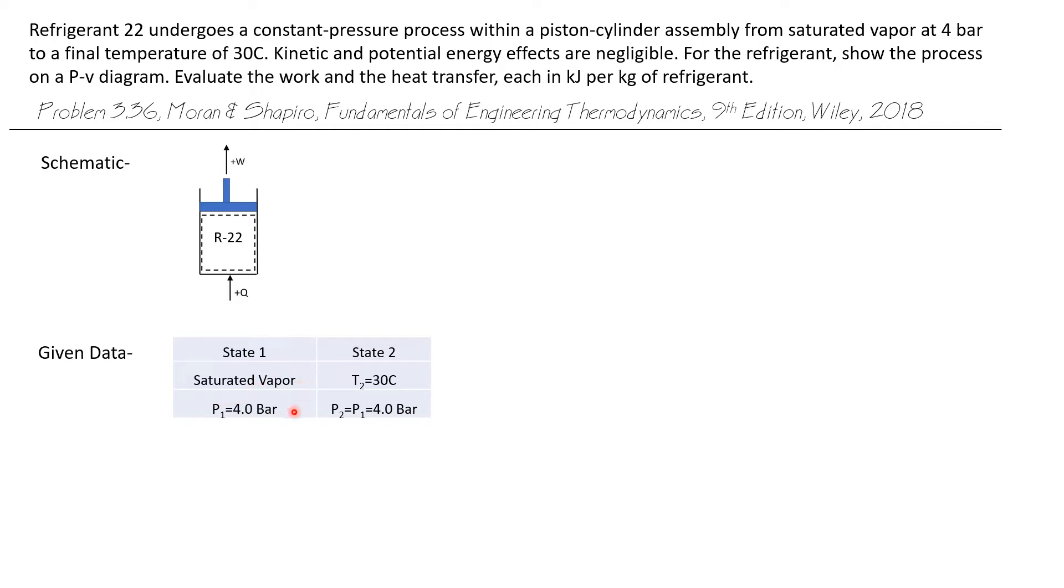Let's look at the given data. State 1 is saturated vapor at 4 bar, and state 2 has the same pressure. It's a constant pressure process with a temperature of 30 degrees Celsius.